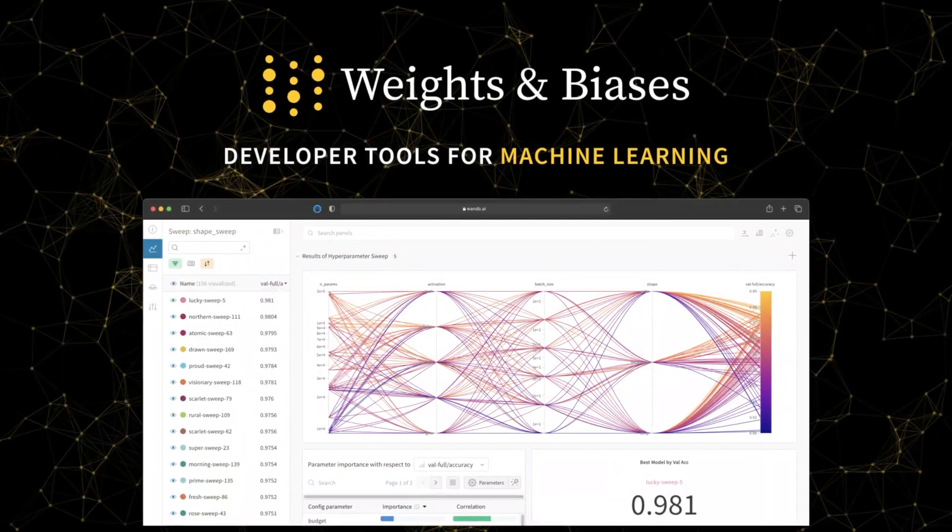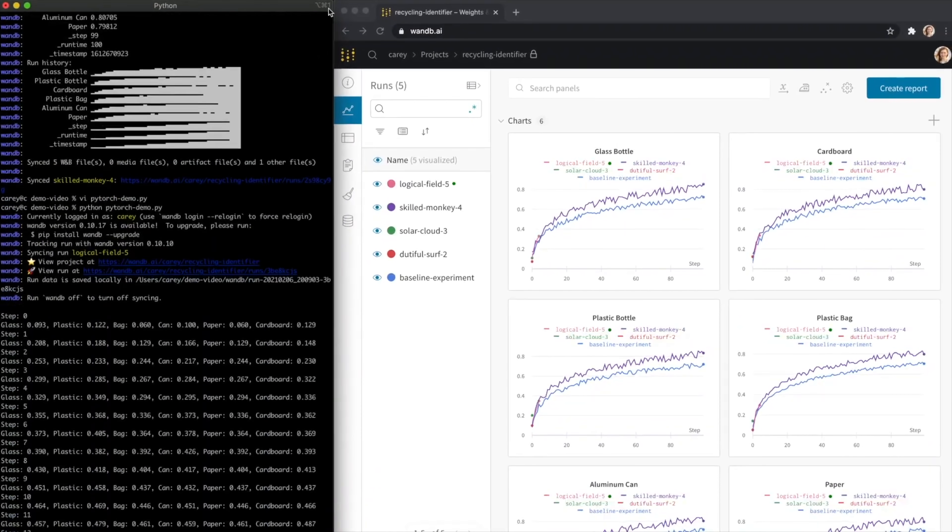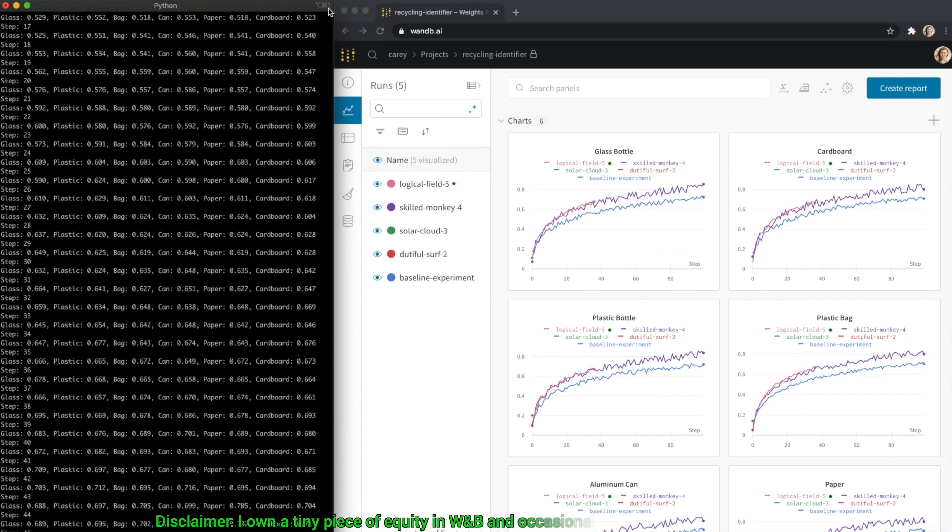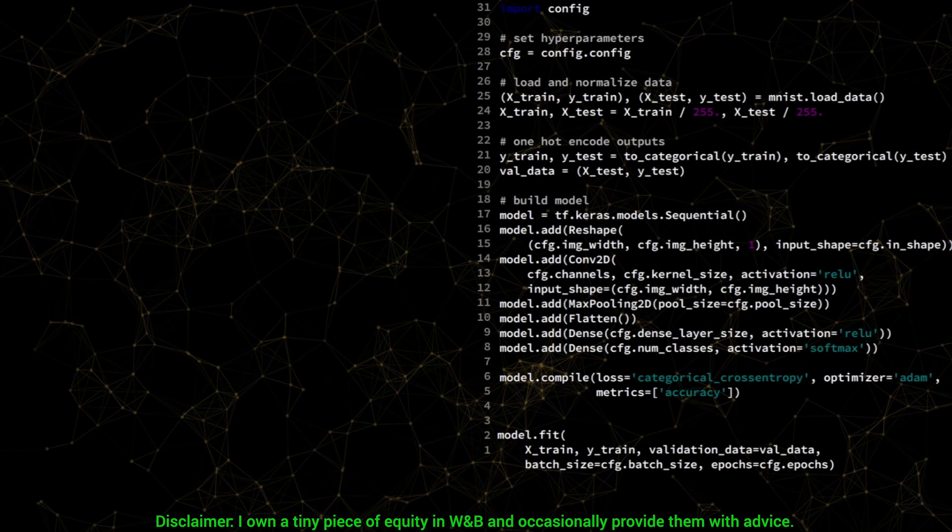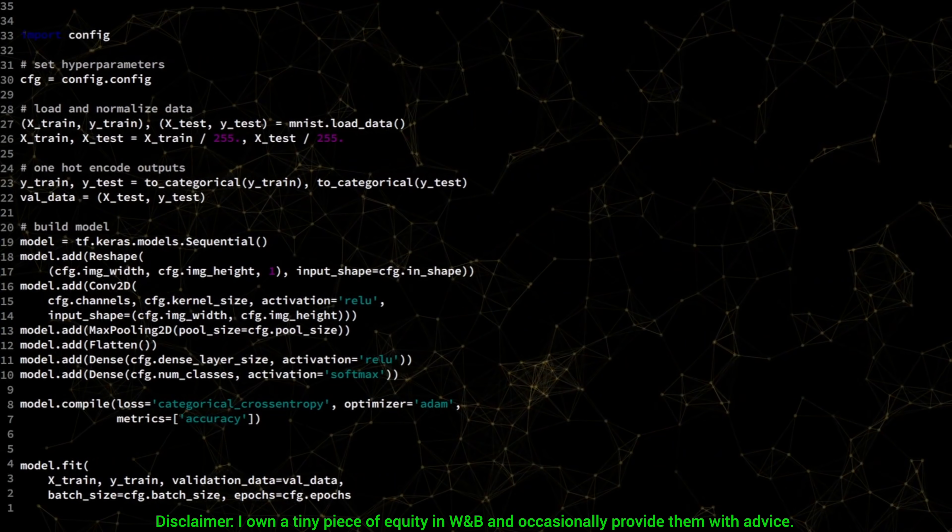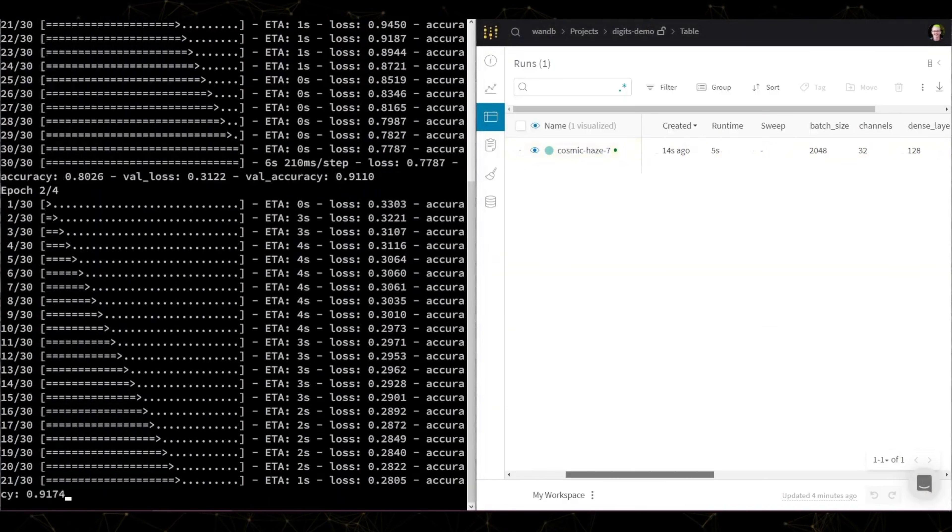This video has been supported by Weights and Biases. Being a machine learning researcher means doing tons of experiments, and of course, creating tons of data. But, I am not looking for data, I am looking for insights. And Weights and Biases helps with exactly that.